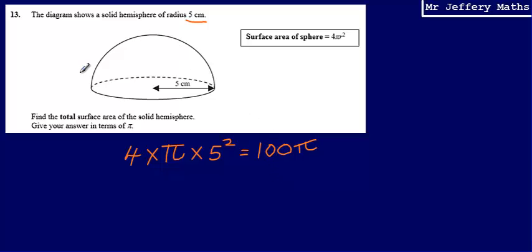Now we've got a hemisphere, so we've got half a sphere. The most obvious thing to do would be to just half our answer here. So we're going to half that answer: 100π divided by 2, which gives us 50π.